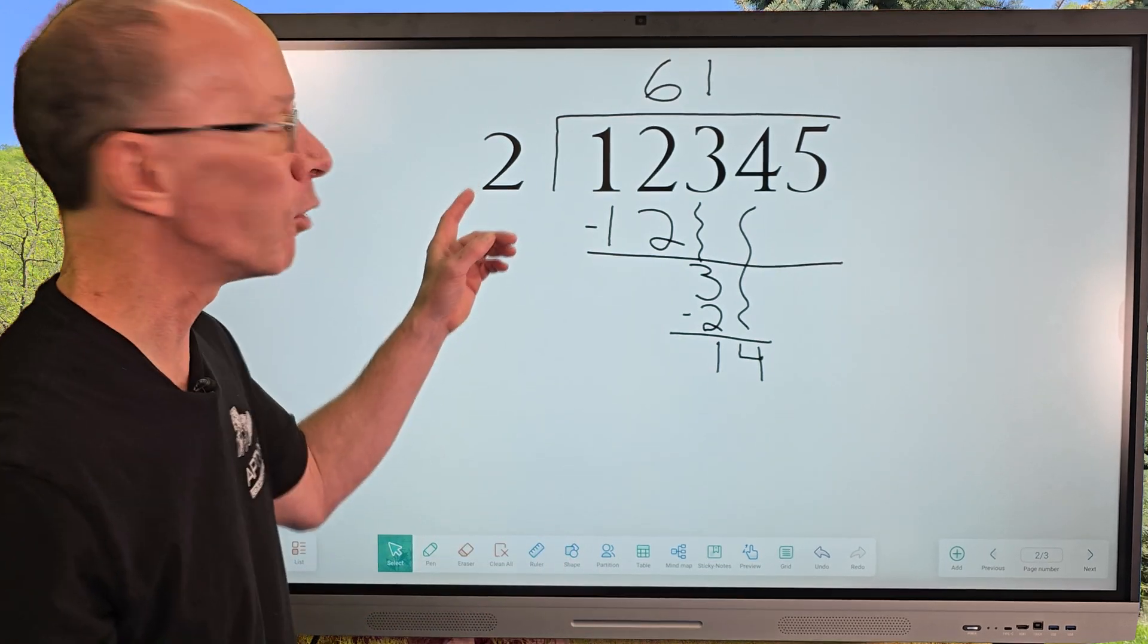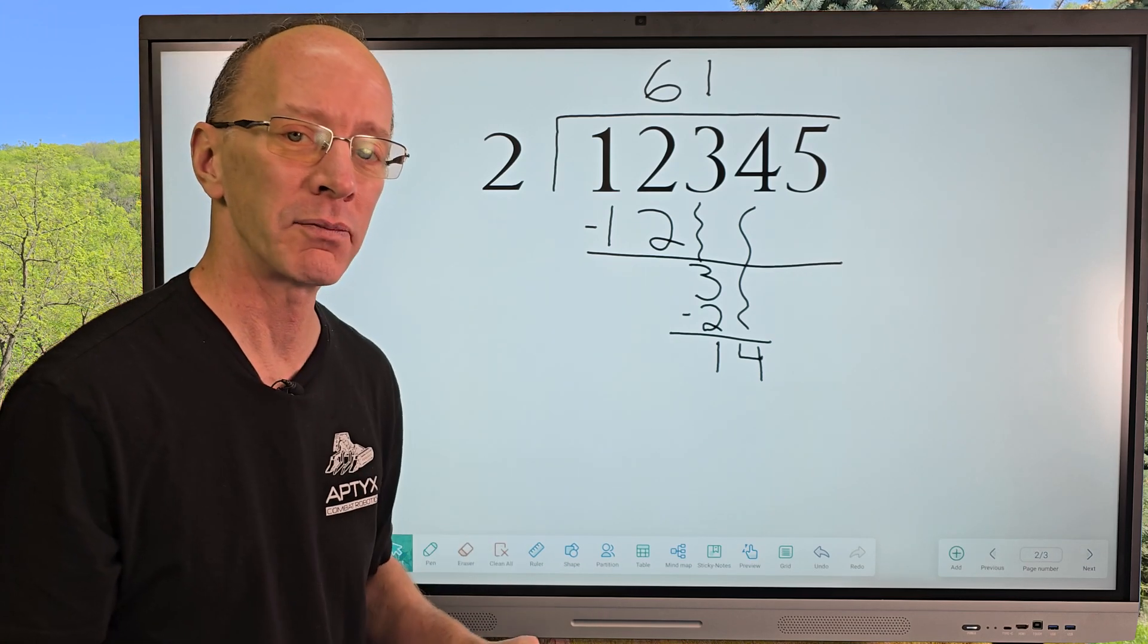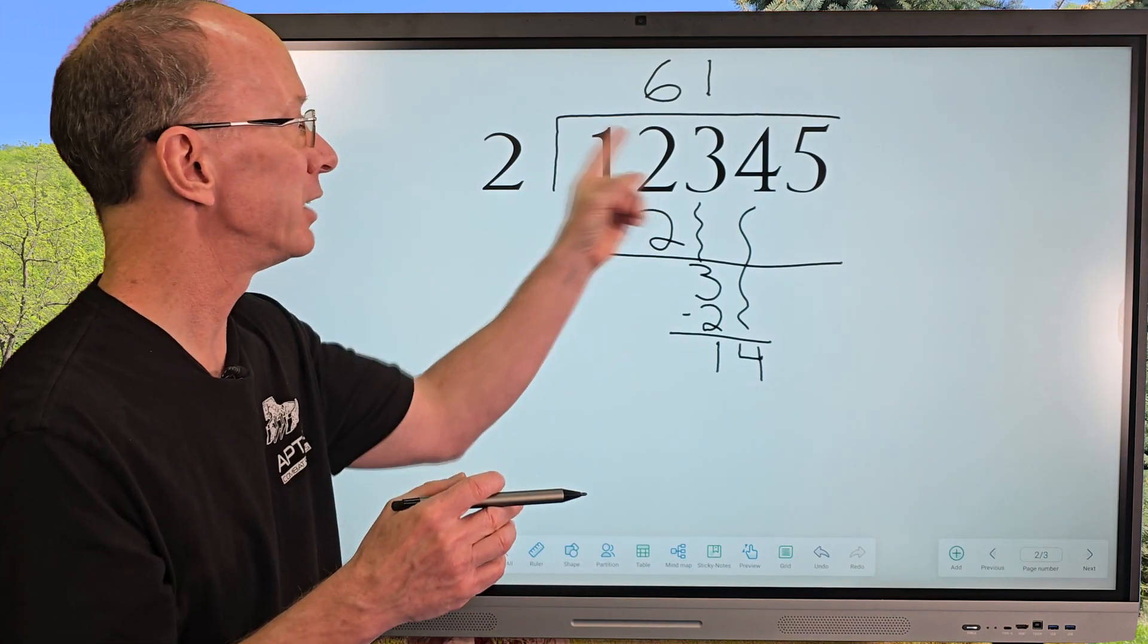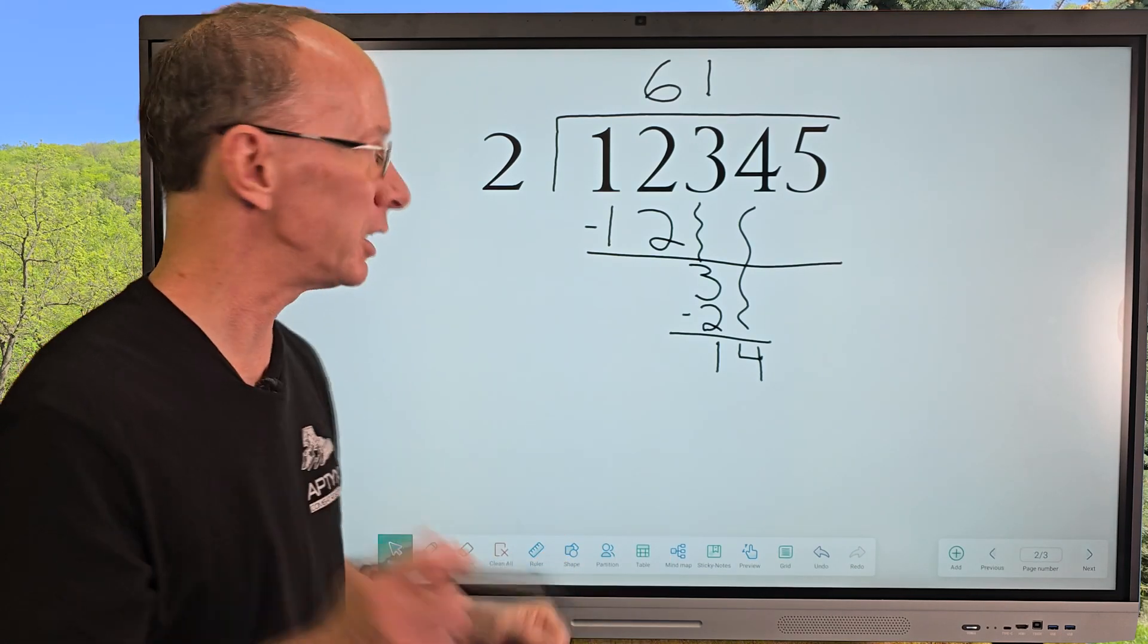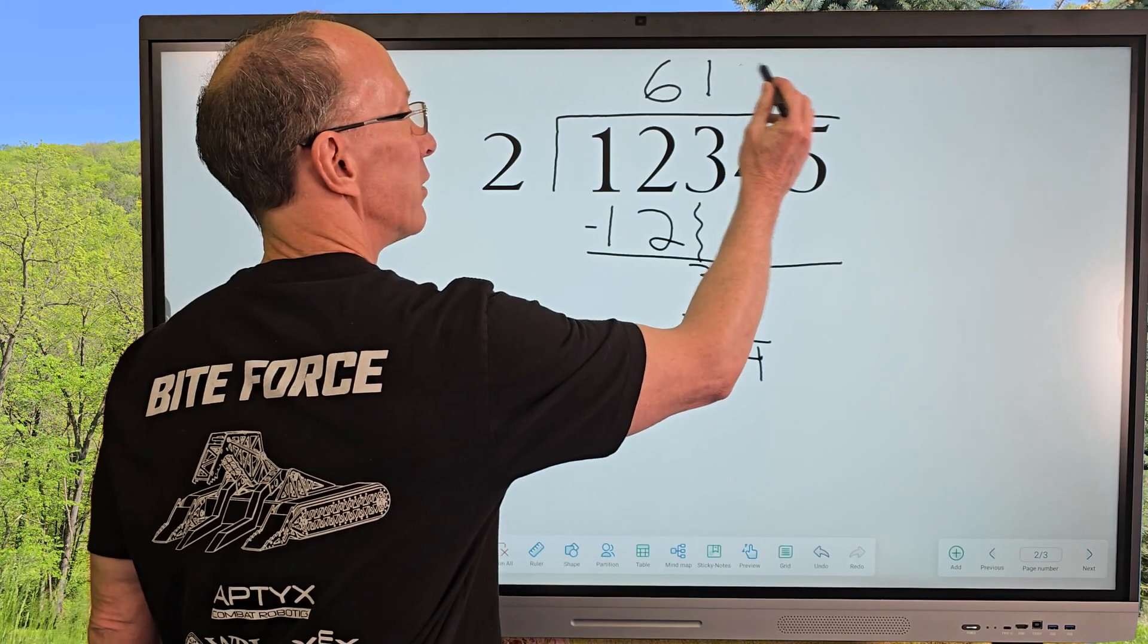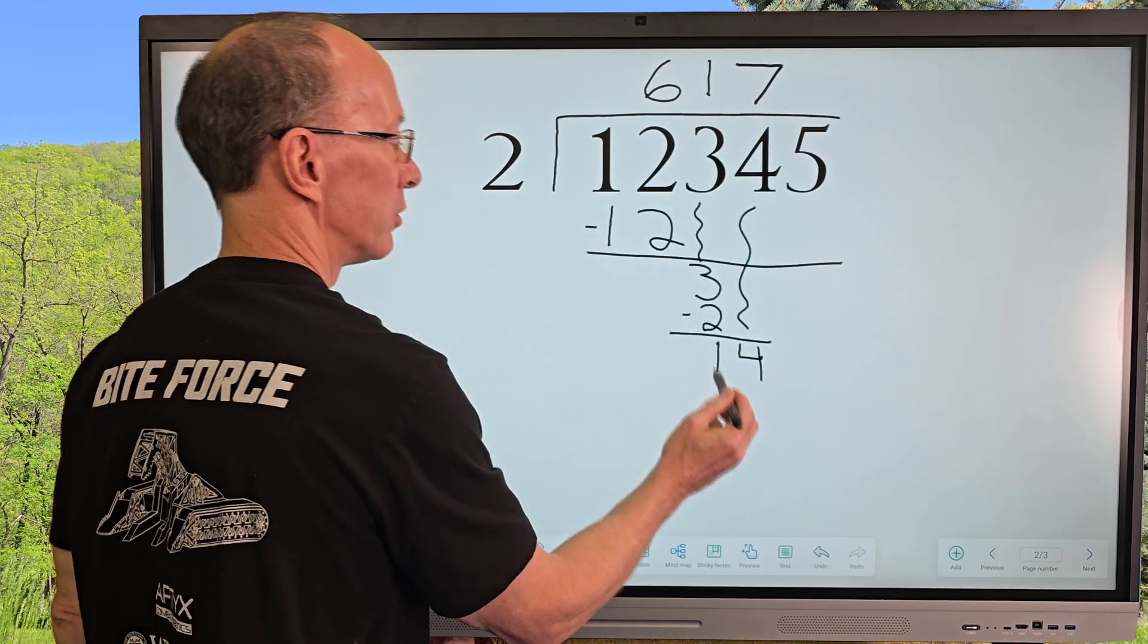All right, now the whole process starts again. How many times can I put 2 into 14? So again, when we did 2 times 6 that was 12, 2 times 7 equals 14. So I'm going to go ahead and put the 7 right here. Whoops, I put the pen tool there. 2 times 7 equals 14.